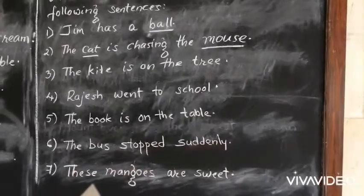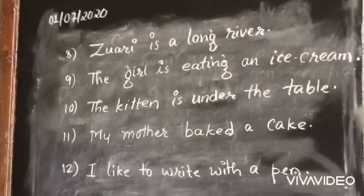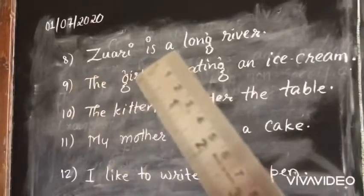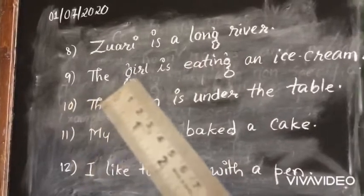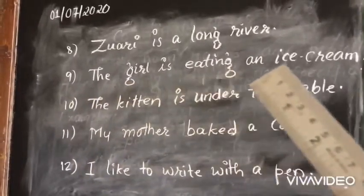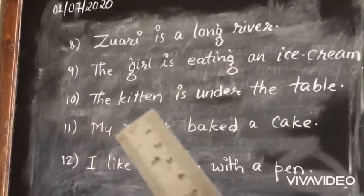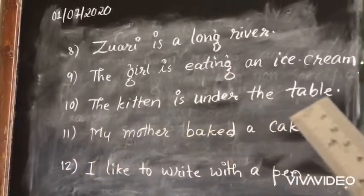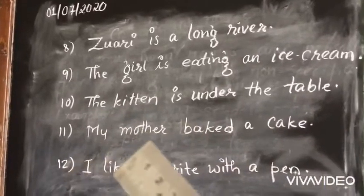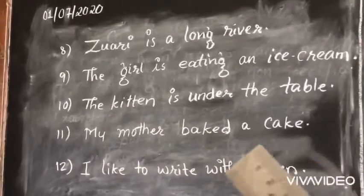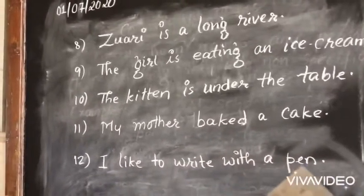Seventh one: these mangoes are sweet. Eighth one: Zuhari is a long river. Ninth one: the girl is eating an ice cream. Tenth one: the kitten is under the table. Eleventh one: my mother baked a cake. And the last one: I like to write with a pen.